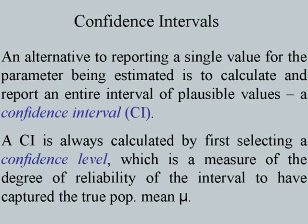This brings us formally to confidence intervals. An alternative to reporting a single value — which is the case for a point estimate — for the estimation of the parameter, we calculate and report an entire interval of possible values, which is called the confidence interval. A confidence interval is always calculated by first selecting a confidence level, which is a measure of the degree of reliability of the interval to have captured the true population mean mu.